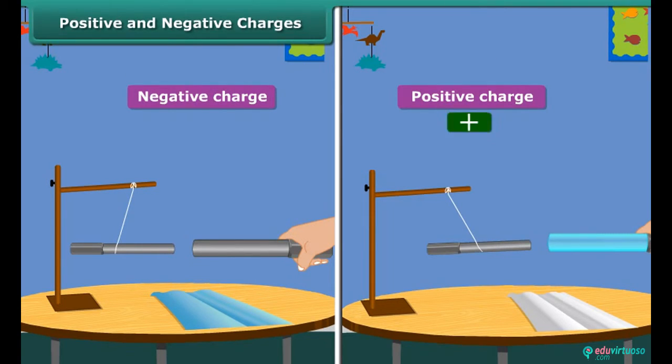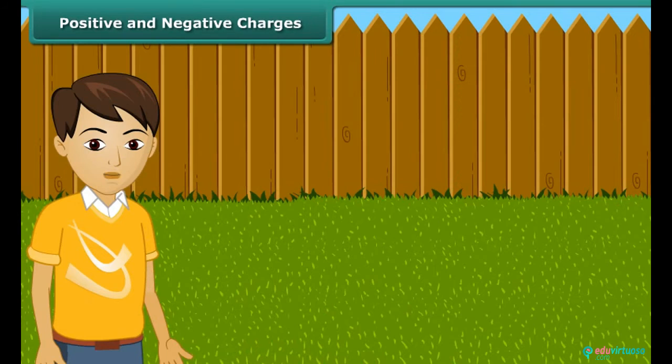The positive charge is shown by the plus sign and the negative by the minus sign. Merely as a convention, charge on a glass rod rubbed with silk is taken as positive, and that of ebonite rod rubbed with woolen cloth is taken as negative. From the earlier activity, we can conclude that like charges repel each other and unlike charges attract each other.